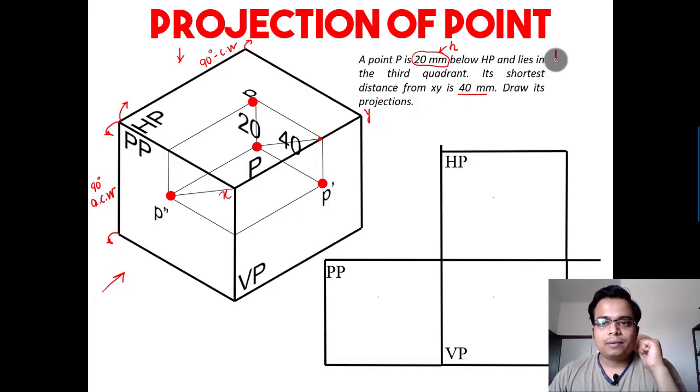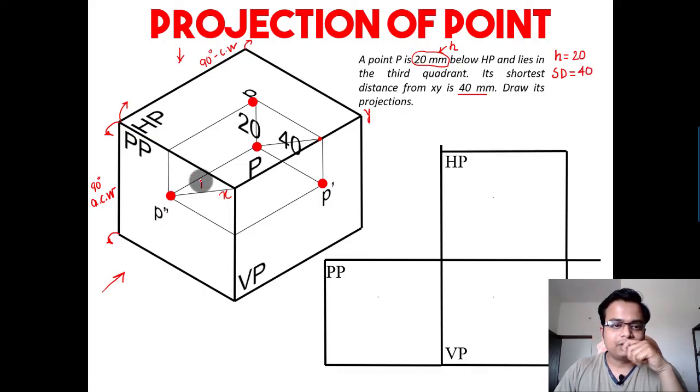So what shall be my next step? Now, as far as this problem is concerned, we have this data: H is equal to 20. We know what the shortest distance is - shortest distance is equal to 40 millimeters - and the shortest distance is something that we can clearly see in the side view, and this is precisely the left-hand side view.